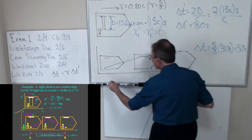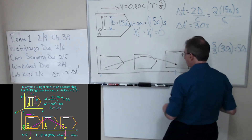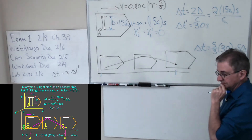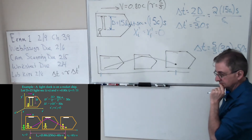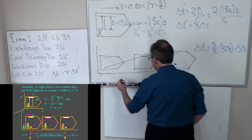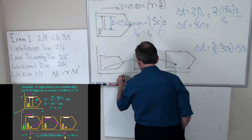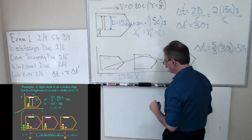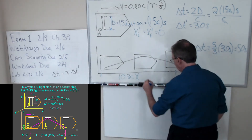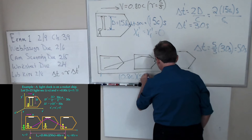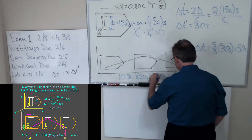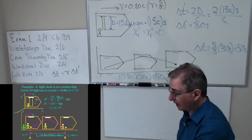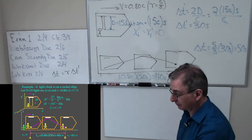How far does the spaceship travel between those two events? The distance is the speed of the spacecraft, 0.8c, times the time interval of 50 seconds, which gives 40 times c seconds. So the distance between the two events according to us is 40 light-seconds. This is actually the same thing as a question that was asked before about the distance between two positions.